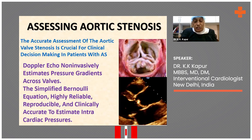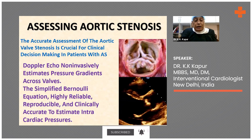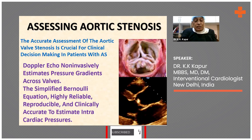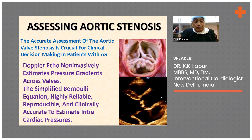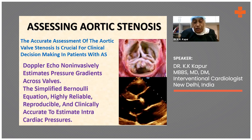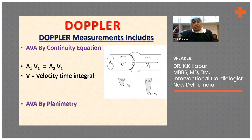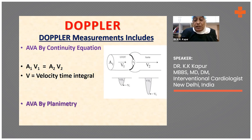The accurate assessment of aortic valve stenosis is crucial for clinical decision making in patients with aortic stenosis. What you do is take the peak gradients across the aortic valve, trying to get as parallel as possible from various planes, and take the best possible gradient — usually from the apical five chamber or the apical view.